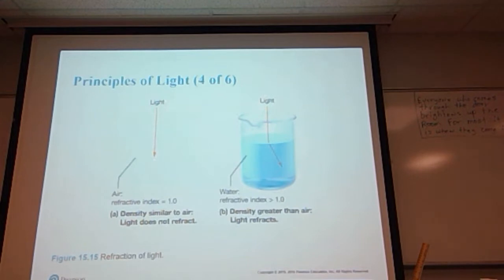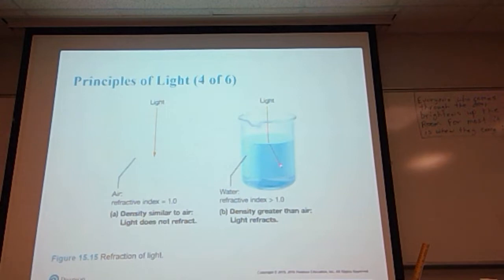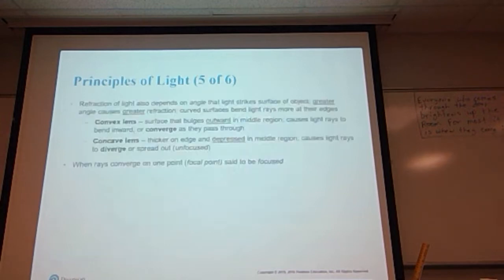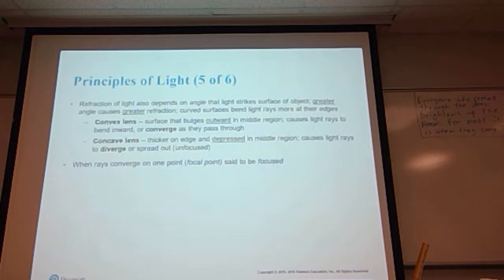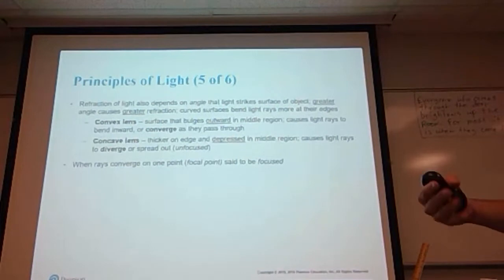But if you just stand the pencil up on your teacher's desk, the pencil looks straight and does not look bent. Another place you can see this is looking at fish in an aquarium — the fish looks like it's right here, but in fact the fish is over here somewhere because of the refraction of light. Refraction also depends on the angle that the light strikes the surface; the greater the angle, the greater the refraction. Curved surfaces tend to bend light more at their edges — that's why depending on whether you are farsighted or nearsighted, your lens will have a different curvature.